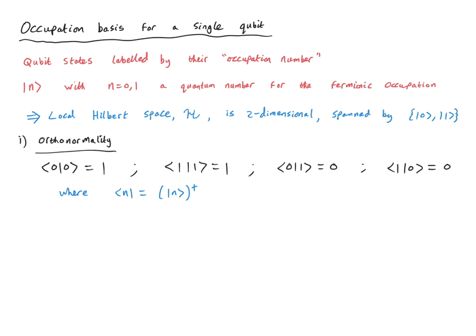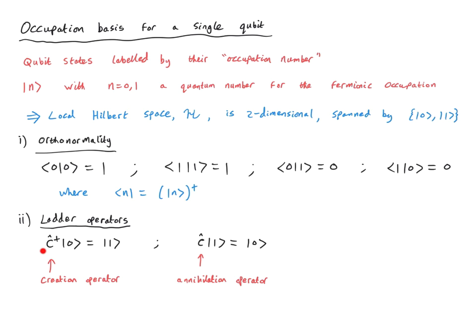Provided these states are orthonormal, we won't have to ever do any of these kinds of integrals. As we will see in the coming lectures, the discussion of many-particle quantum mechanics actually avoids completely any of these kinds of integrals. We work directly with the Dirac brackets. With this basis at hand, we can now define ladder operators. In the context of second quantization for fermions, these are referred to as creation or annihilation operators.